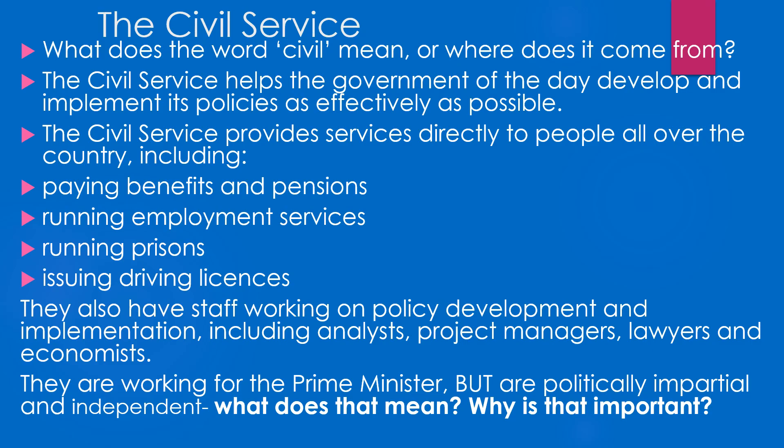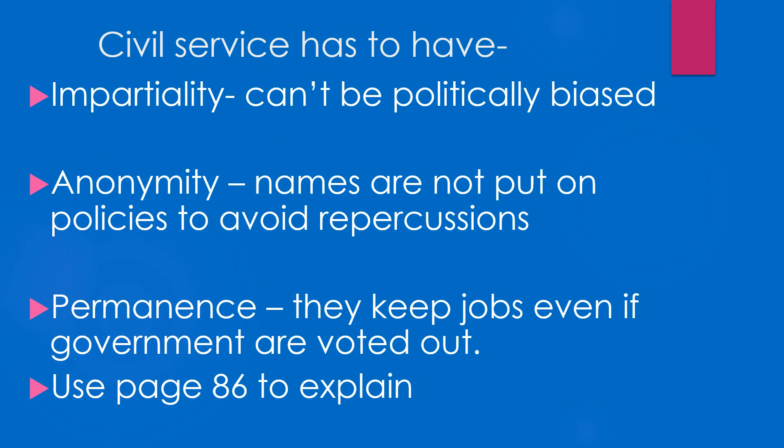They also look at policy development. For example, with coronavirus, they're the ones doing the day-to-day running of sorting out testing and all the different laws that go along with it. They have to be politically impartial — they're not allowed to be politically biased because that would mean they'd favour certain policies. They also have anonymity, so their names are never put on any policies, because if somebody didn't like it they could go and find them. They also have permanence, which means even if the current government are voted out, they don't lose their jobs — they carry on.